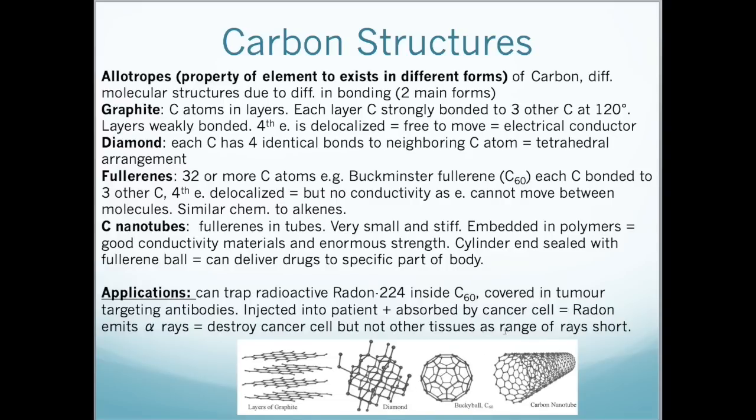Radioactive radon-224 is put inside a buckyball which is shown here, which has 60 carbon atoms, which is covered in tumor targeting antibodies. Which is then injected into a patient and can be absorbed by cancer cells in the body. And because radon is radioactive, it emits alpha rays which then can destroy cancer cells. But the alpha rays do not affect other tissues because their range is very short.